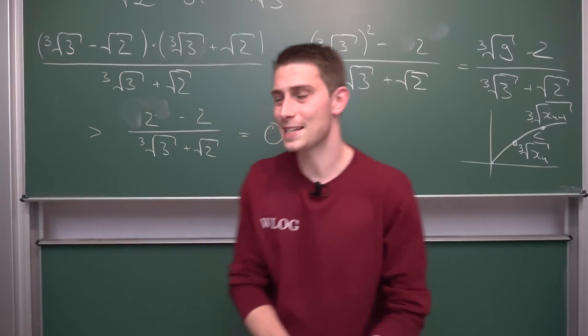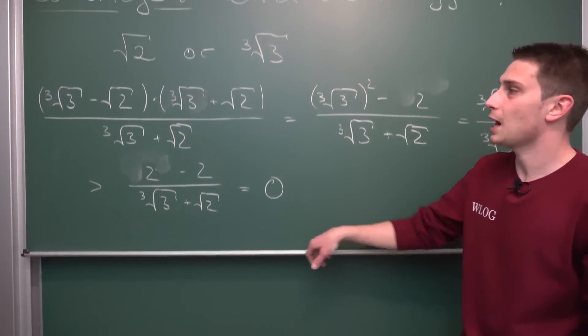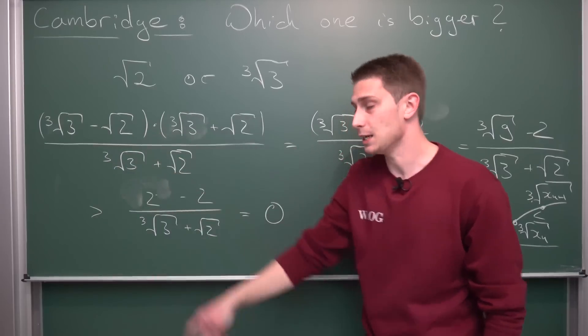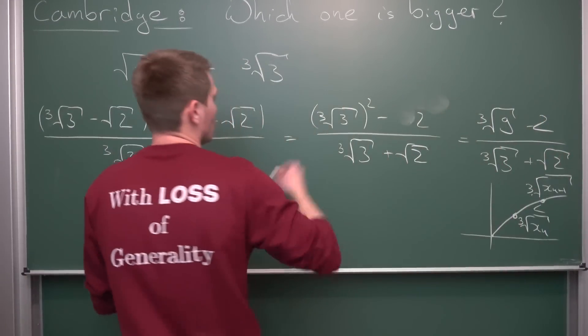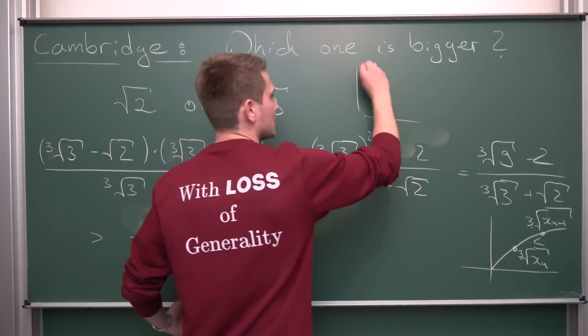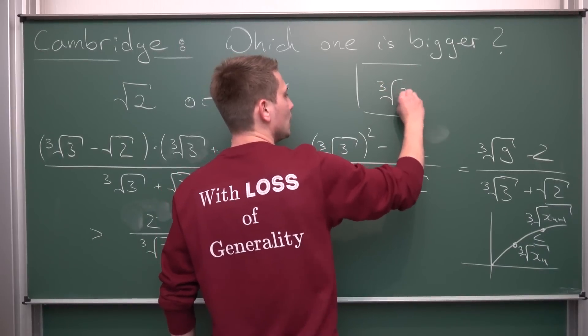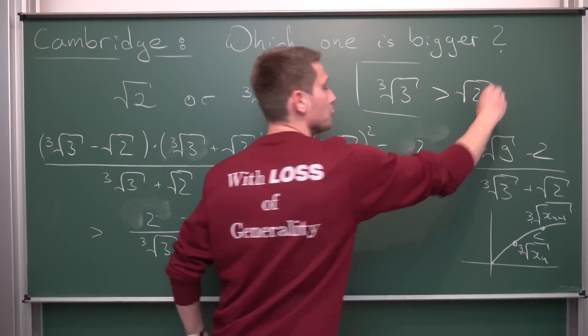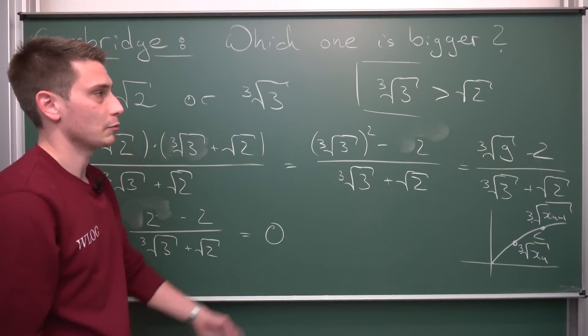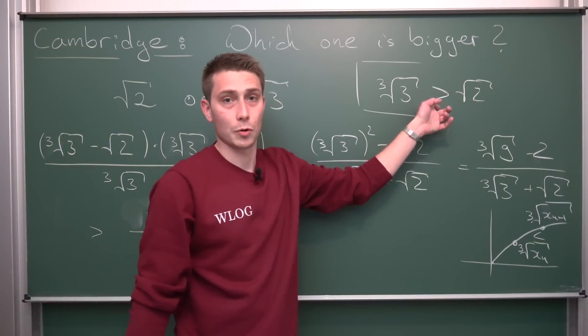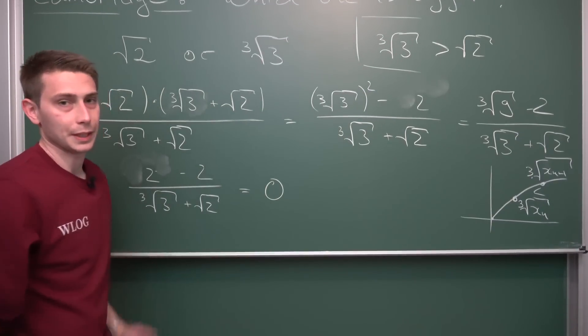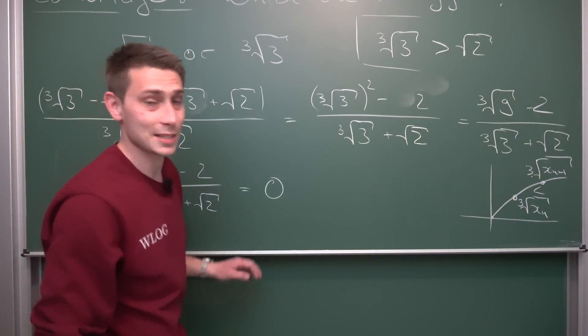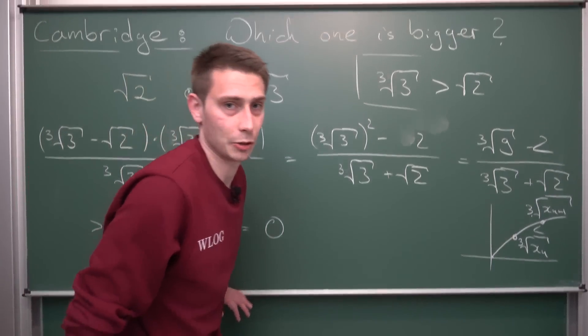And this already ends our argument. What we got is that our original difference that we got here is strictly greater than 0. What that means also is, let me put this here as the final conclusion, is that the cube root of 3 is strictly greater than the square root of 2. I hope you can see where this came from. If we were to subtract the square root of 2 on both sides, you are going to notice that we got the same order relation right here, with something being greater than 0. And this already ends the argument and I think it's pretty elegant in my opinion.